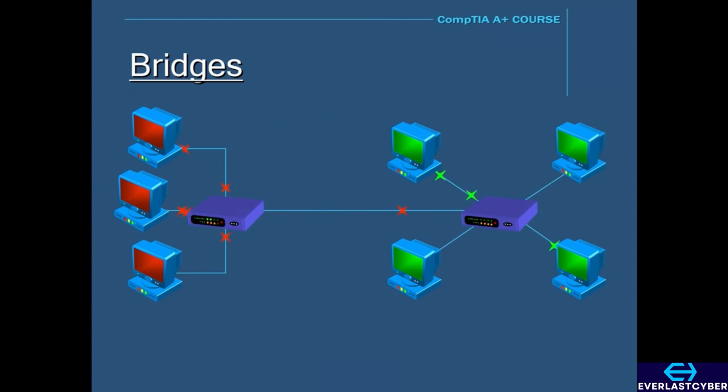Bridges are used to divide a network into separate collision domains. For instance, here we have a network, and this network is segmented into two by a couple of hubs. If you notice, all the broadcast traffic from the two segments is seen by all the computers on both sides, and this causes unnecessary traffic.